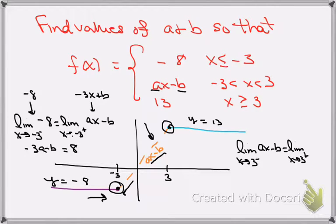And on the right-hand side, the function is y equals 13. Again, this is the limit of a constant, so that's going to be 13. And this limit here that's on the left, when x goes to 3, then I get 3a minus b. So, this tells me that 3a minus b must be equal to 13.